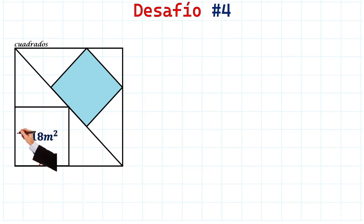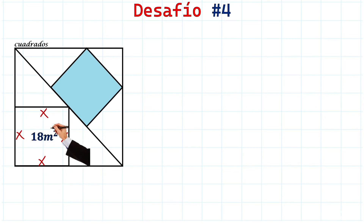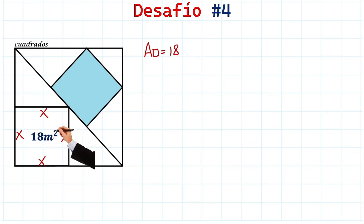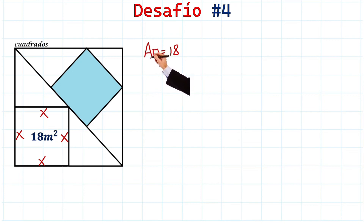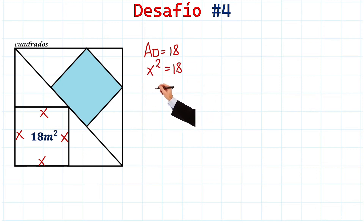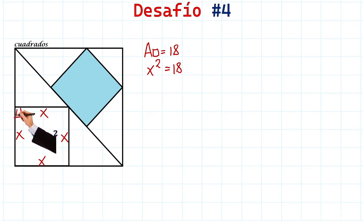We have this square and let's say its side is x. Therefore, because the area of this empty square is 18 square meters, and the area of a square is side times side, if the side is x we can say that x squared equals 18.